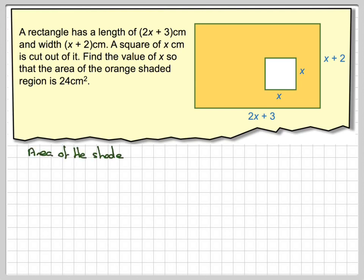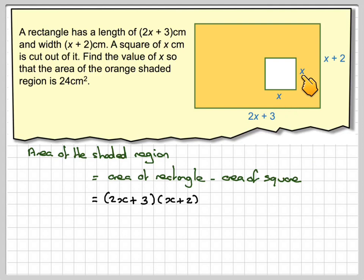So the area of the shaded region is going to be the area of the rectangle minus the area of the square. The area of the rectangle is going to be 2x plus 3 times x plus 2. And then you're going to have to take from that x times x for the area of this square here.